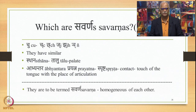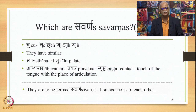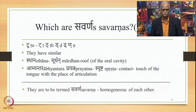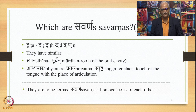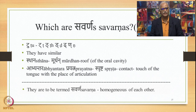Similarly, Chu — namely Ch, Ch, J, J and N — also have similar Sthana Talu or palate and Abhyantara Prayatna Sprashta. All these 5 are termed Savarna of each other and referred to as Chu. The next set, Tu — T, T, D, D and N — have similar Sthana Murdhan, roof of the oral cavity, and Abhyantara Prayatna Sprashta. These 5 are also termed Savarna of each other and called Tu.